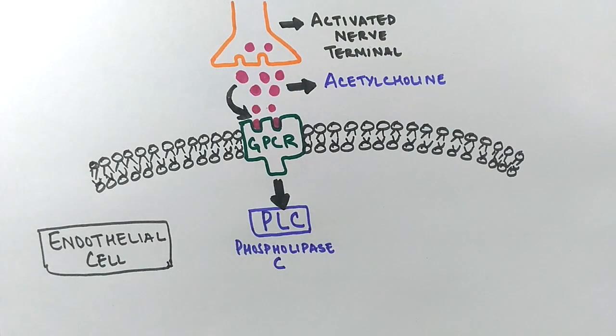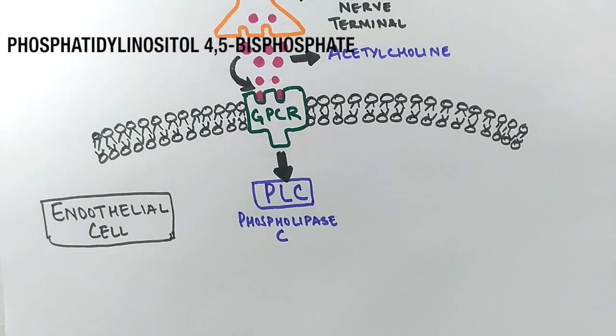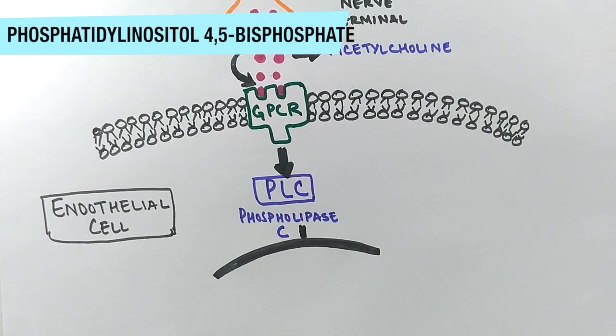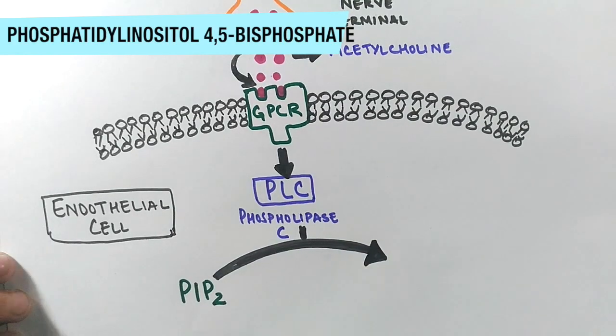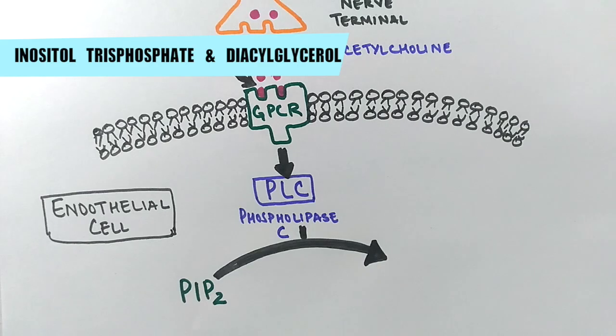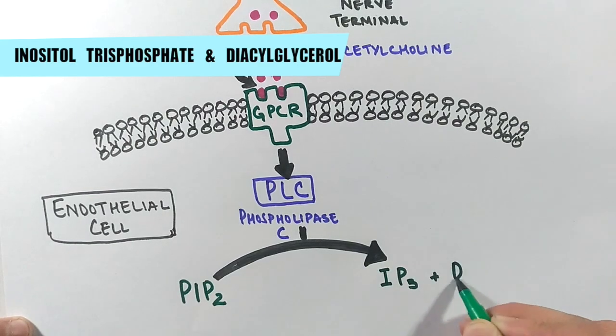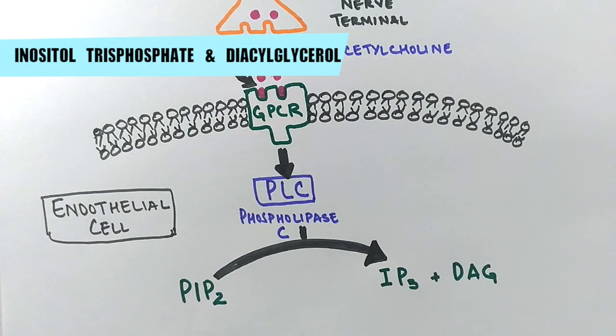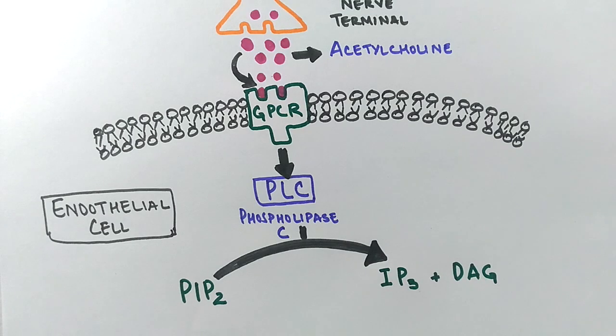PLC selectively catalyzes the hydrolysis of phospholipid phosphatidylinositol 4,5-bisphosphate, that's PIP2, and releases inositol 1,4,5-triphosphate, that's IP3, and diacylglycerol, that is DAG. That means PIP2 gets catalyzed into IP3 and DAG.